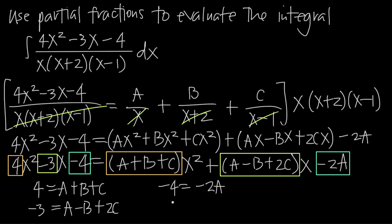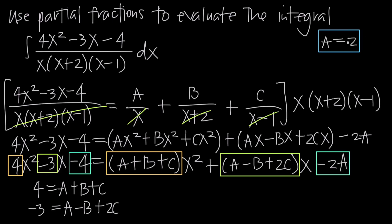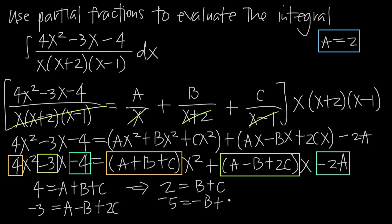Dividing both sides of the constants equation by negative 2 gives A equals 2. Plugging A equals 2 into the first equation: 4 equals 2 plus B plus C, so B plus C equals 2. Plugging into the second: negative 3 equals 2 minus B plus 2C, so subtracting 2 gives negative 5 equals negative B plus 2C.